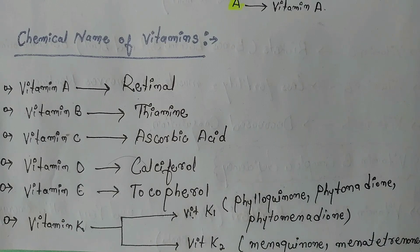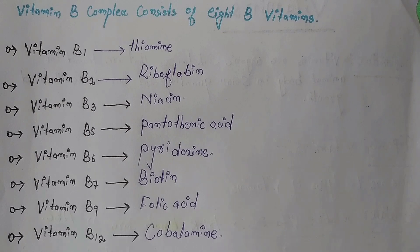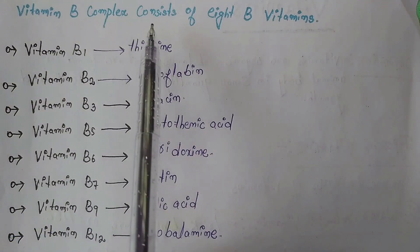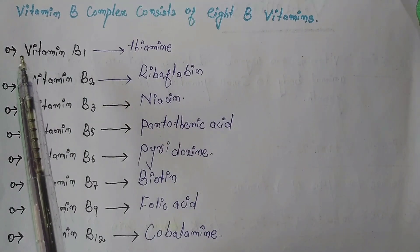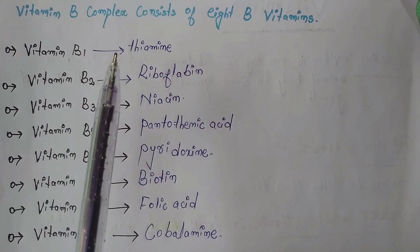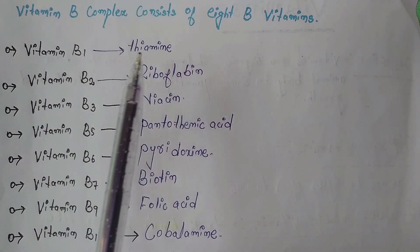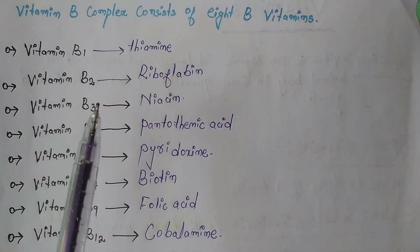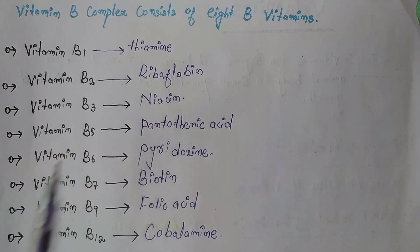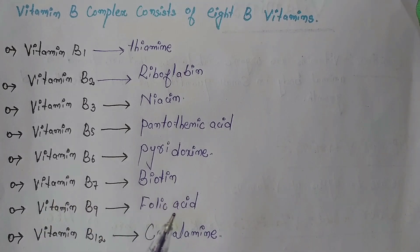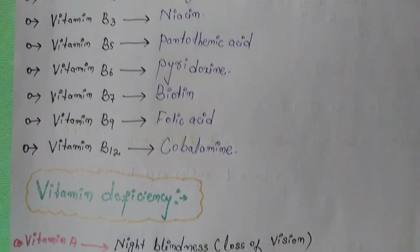Now Vitamin B complex. There are 8 B vitamins: Vitamin B1, B2, B3, B5, B6, B7, B9, and Vitamin B12 (cobalamin).